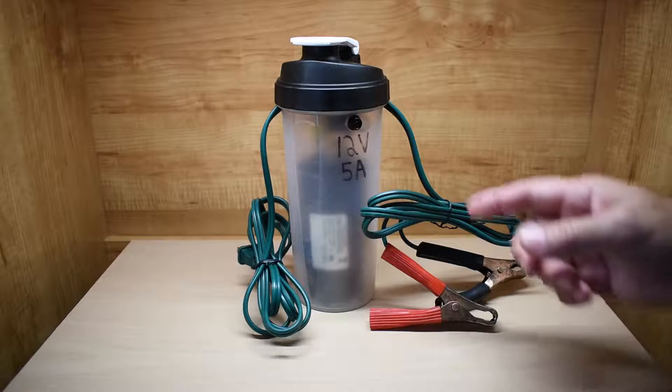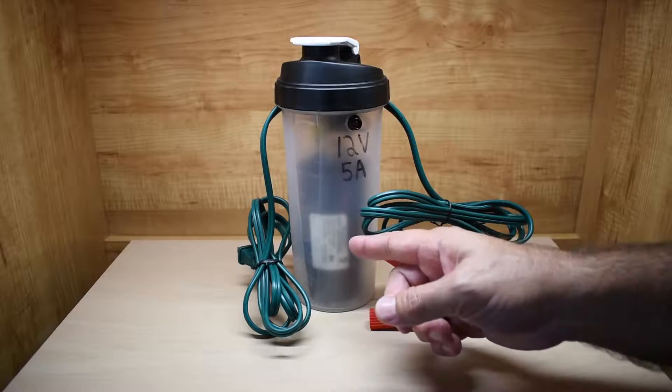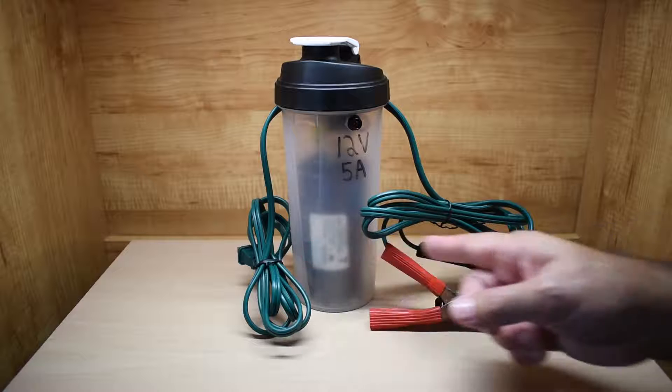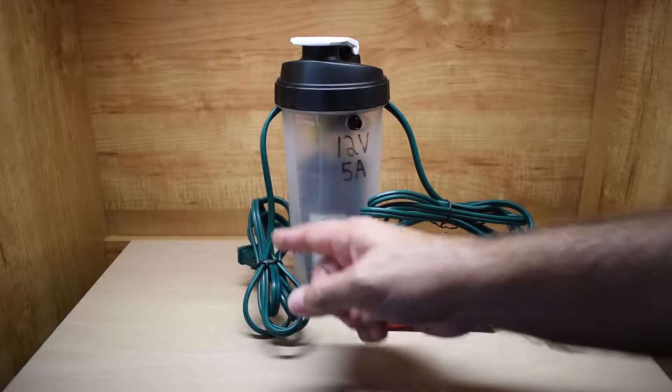The lead acid battery charger you see here is a capacitive charger. It does not use a transformer to create a lower voltage output to charge the battery. A run capacitor, which is oil-filled, is used to limit the current flowing into the battery, and the one that's inside here looks like what you see right over here.